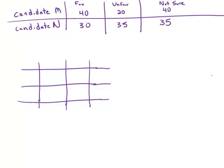The table above shows the results of a survey of 100 voters who each responded favorable, unfavorable, or not sure when asked about their impressions of candidate M and candidate N. What was the number of voters who responded favorable for both candidates?